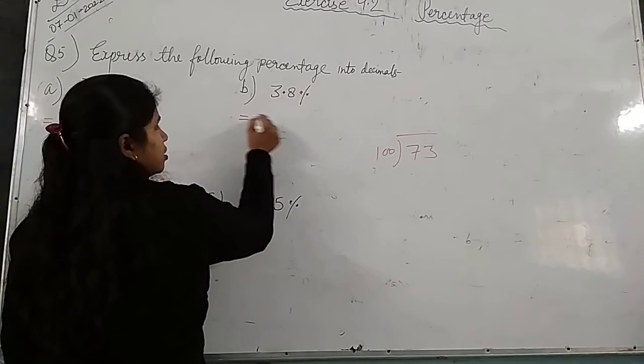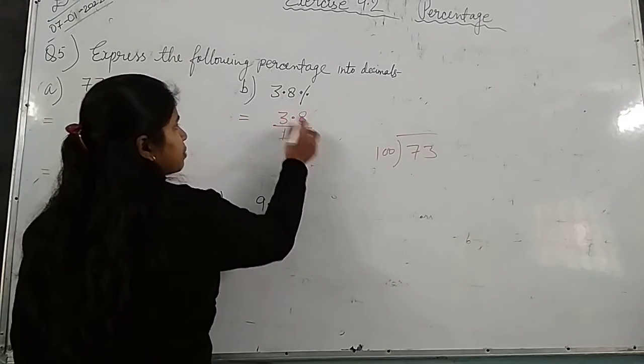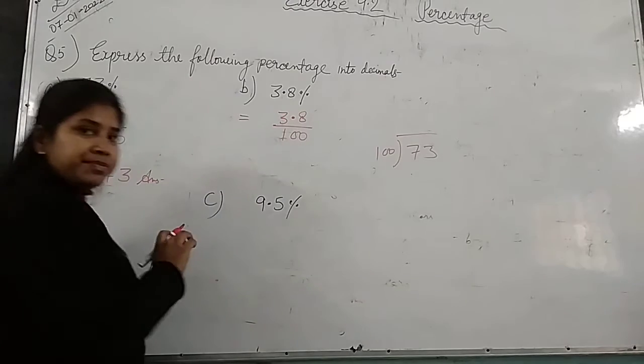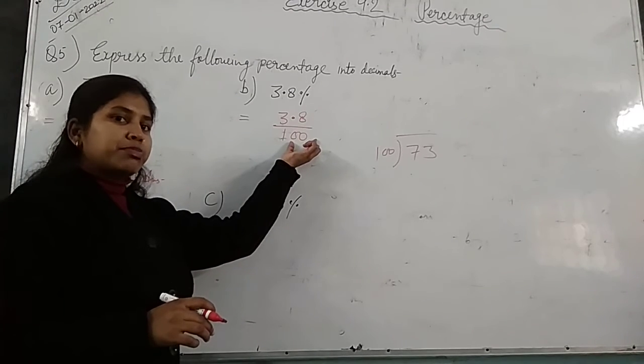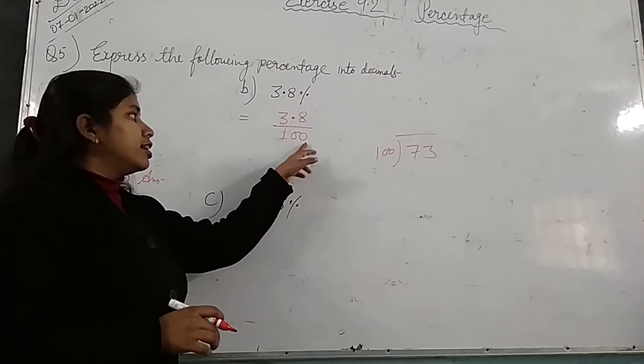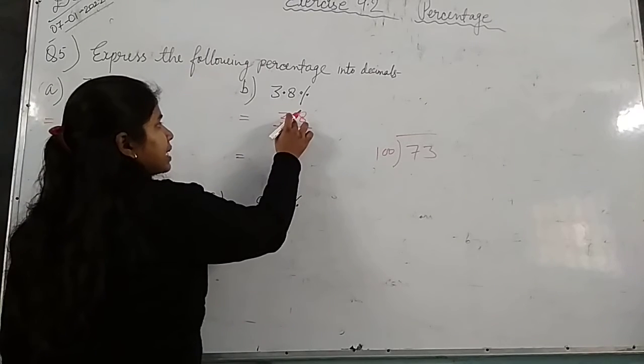Now, next here: 3.8 percent. So 3.8 percent, that means 3.8 upon 100. Now how many zeros here? Two zeros. Then we place point from right hand side, two digits equal. So here this will be my point, this will be my point.